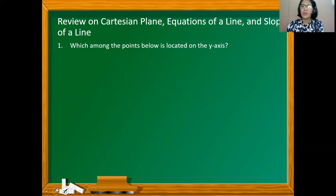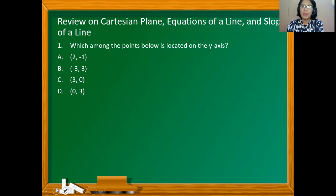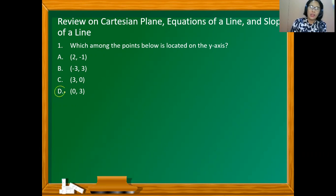Which among the points below is located on the y-axis? Take note that points located on the y-axis are the y-intercepts, and these y-intercepts have 0 x-coordinate. So, among the choices, option D has 0 x-coordinate, and that's the answer.